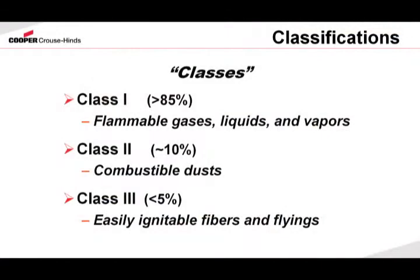The building blocks for hazardous locations are classes, divisions, and groups. When we're talking about the classification of the product, we're talking about whether it's a gas, vapor, or liquid for Class 1. For Class 2 locations, we're dealing with combustible dusts, and in Class 3 locations, we're dealing with flyings and fibers.